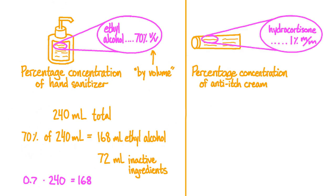Another slightly different example of percentage concentration can be found on a tube of anti-itch cream. Anti-itch cream is used for bug bites, rashes, and other itches. Its active ingredient is hydrocortisone, a steroid. If we look on the back of a tube of anti-itch cream, we might see: hydrocortisone, 1% M/M.